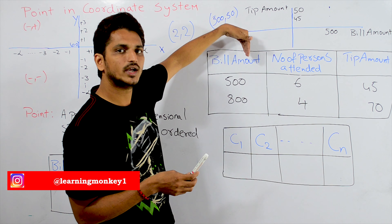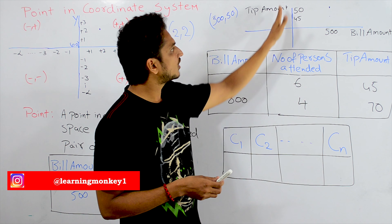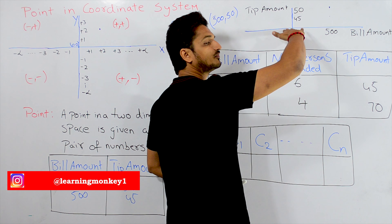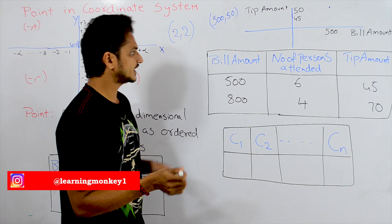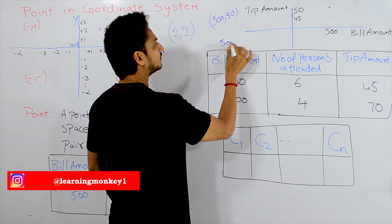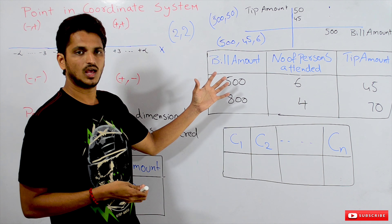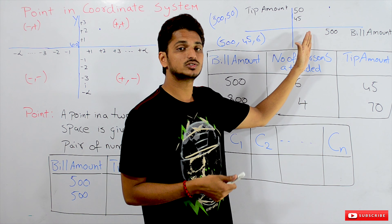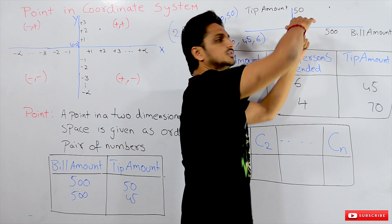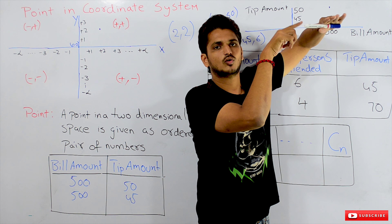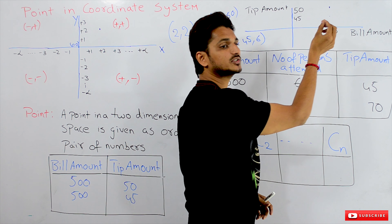Each column corresponds to one coordinate, so we need three-dimensional coordinate space. The X coordinate represents bill amount, the Y coordinate represents tip amount, and the Z coordinate represents number of persons attended. The data point is (500, 45, 6) — meaning 500 units towards positive X, 45 units towards positive Y, and 6 units along the Z coordinate. This is how we represent data in three-dimensional coordinate space.